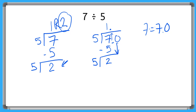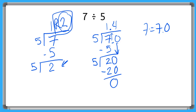Now I can take this 0 and bring it down — it's my new dividend. So my divisor is 5 and my dividend is 20. 5 goes into 20 how many times? From your 5 fact families, 4 times. And 4 times 5 is 20. Subtracting that gives me 0, so now I'm complete. I've written my remainder of 2 as 0.4, so 7 divided by 5 is equal to 1.4.